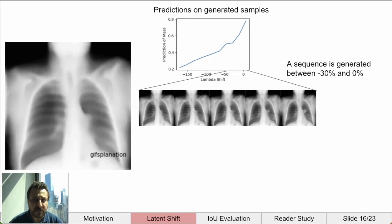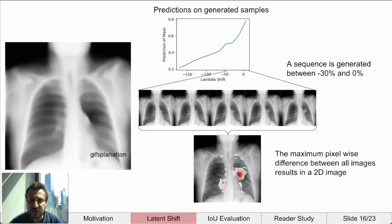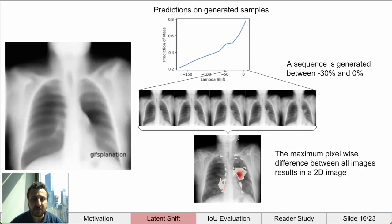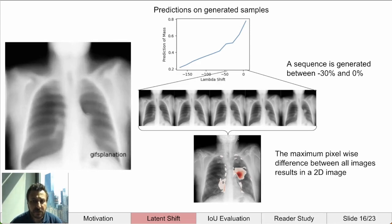From this sequence, we can construct a 2D attribution image — similar to a traditional attribution map — by taking the maximum pixel-wise difference between every image and the unperturbed reconstruction. There are some other approaches for this, but the ones we tried all work about the same.